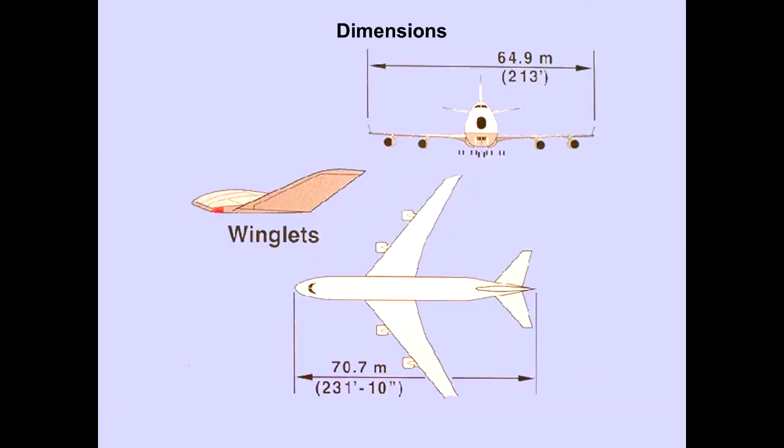Winglets are the most visible feature on the 747-400. The result of this wing is a fuel burn reduction from previous 747 models.